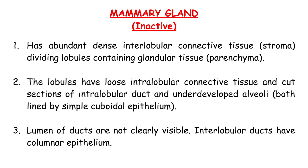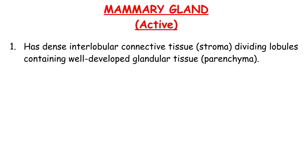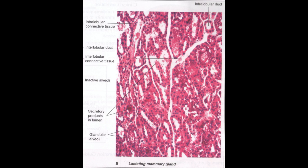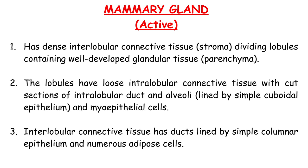Mammary gland active has dense interlobular connective tissue stroma dividing lobules containing well-developed glandular tissue, i.e. the parenchyma. The lobules have loose intralobular connective tissue with cut sections of intralobular duct and alveoli lined by simple cuboidal epithelium and myoepithelial cells. Interlobular connective tissue has ducts lined by simple columnar epithelium and numerous adipose cells.